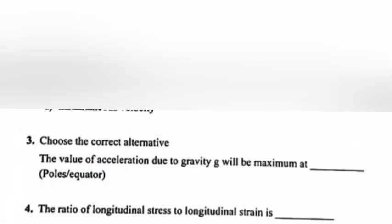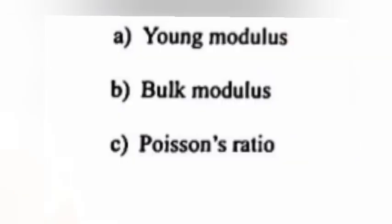Question 3: Choose the correct alternative. The value of acceleration due to gravity g will be maximum at dash, poles or equator? Answer: poles. Question 4: The ratio of longitudinal stress to longitudinal strain is dash.